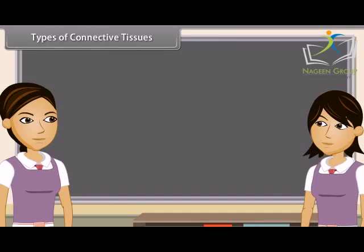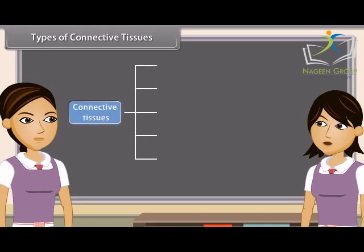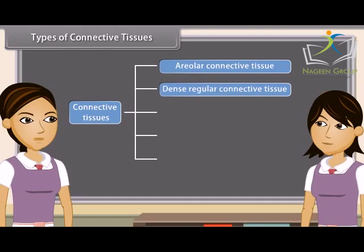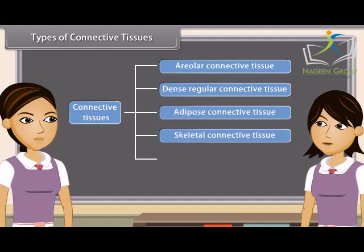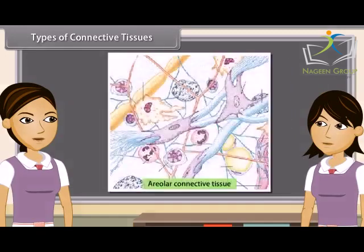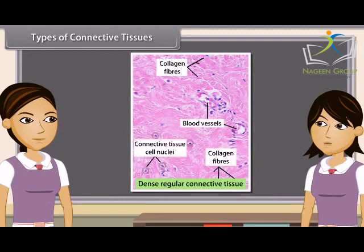Madhuri, do you know how many types of connective tissues there are? In animals, there are mainly five types: Areolar connective tissue, Dense regular connective tissue, Adipose connective tissue, Skeletal connective tissue, and Fluid connective tissue. Areolar connective tissue is a loose and cellular connective tissue; its matrix contains white and yellow collagen fibres. Dense regular connective tissue has orderly and densely packed fibres and cells, and is a main component of tendons and ligaments.